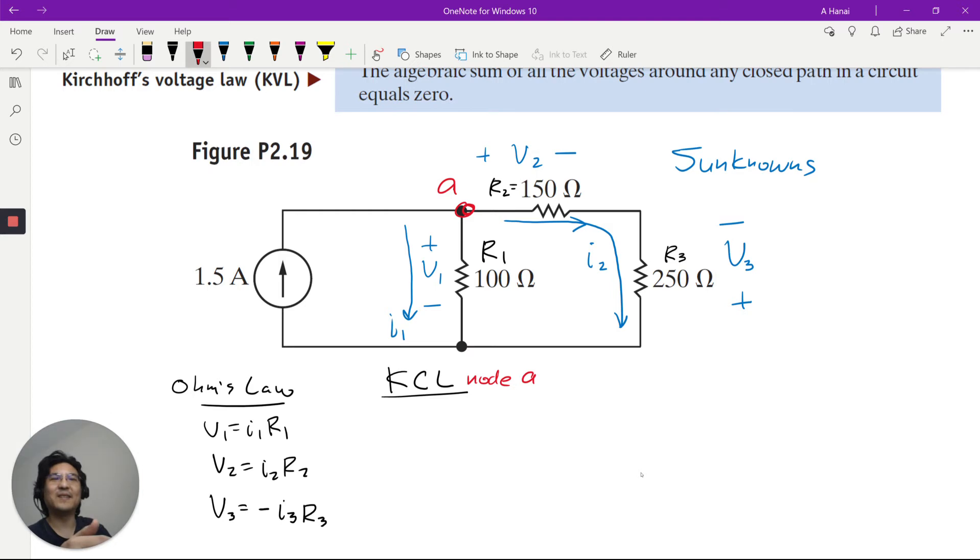Okay, so node A looks like there's this current this way, so I'll just draw that. And then see I1 is going down, and then I2 is going out to the right. Okay, so let's pick is going into the node positive, or leaving the node positive. Up to you, it doesn't matter. So how about I'm going to pick going out of the node is positive. So I1 is positive, I2 is positive, and then that would be negative. I2 equals zero. So that's KCL for node A.